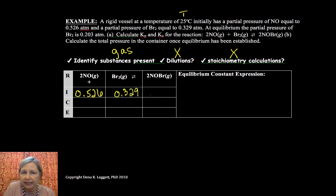So we are given initial values of 0.526 and 0.329. I'm going to show you how to fill in this RICE table. And there's no indication I have any product. We don't have to worry about Q or the reaction quotient because this reaction has no choice but to proceed to make product.